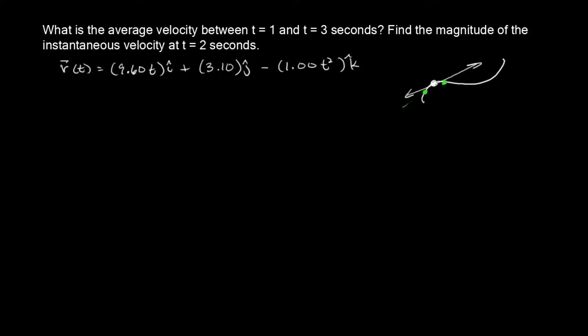As you draw the line through these two points, you notice the slope is not the same, so you don't really get an exact answer. That's what it means to find the instantaneous velocity at a particular point — in this case, at two seconds.